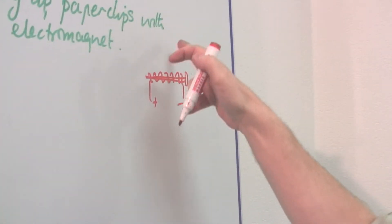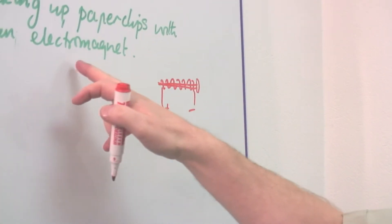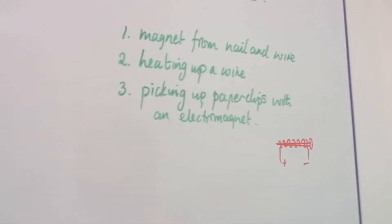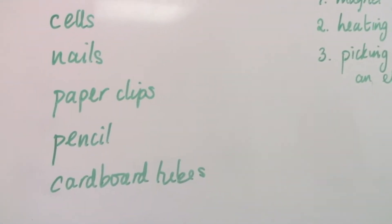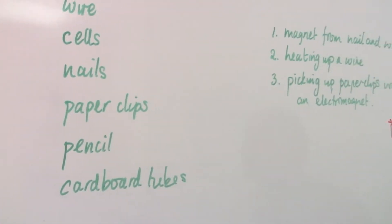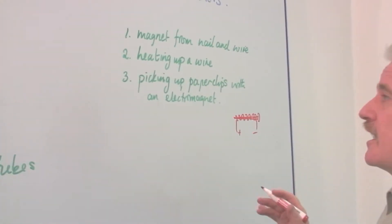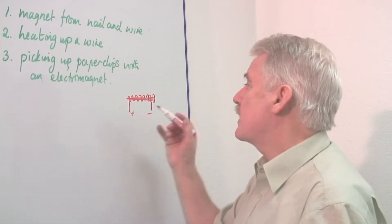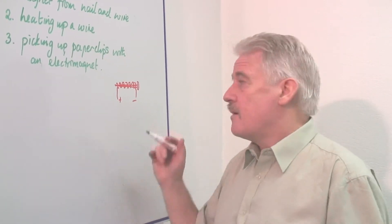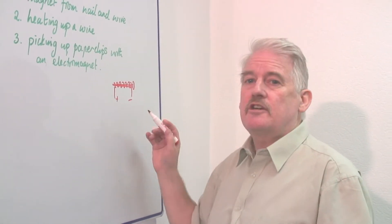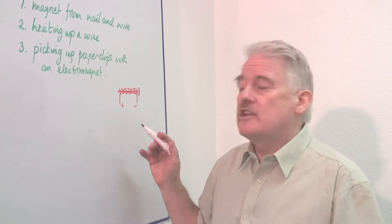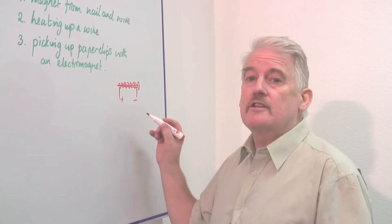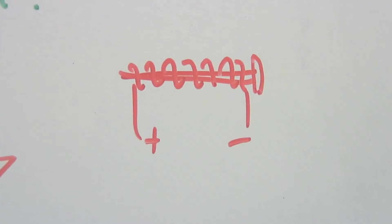Using this of course you can pick up paper clips and that is part of my shopping list you might say. So that's a good little experiment to do and you can investigate the strength of the magnet, how many paper clips you can pick up by increasing the number of turns and by changing the number of batteries that you're pushing the current through with.